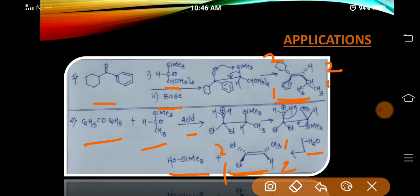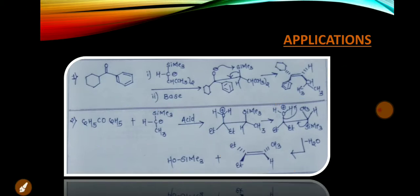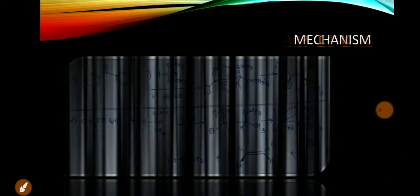Here we cannot specify cis or trans because two groups are of the same priority. So here we cannot predict stereochemistry. Let's better understand this application by the mechanism.